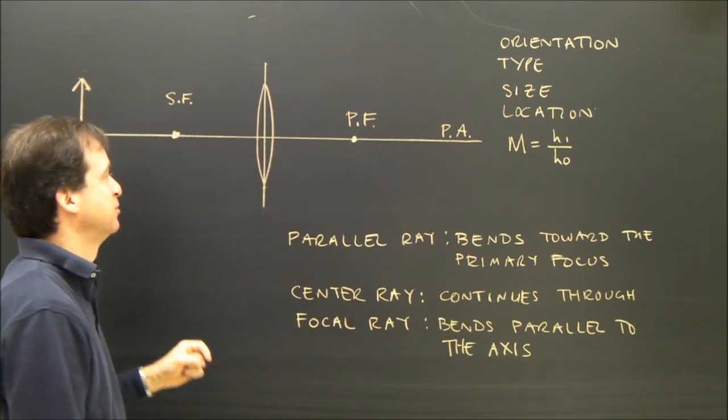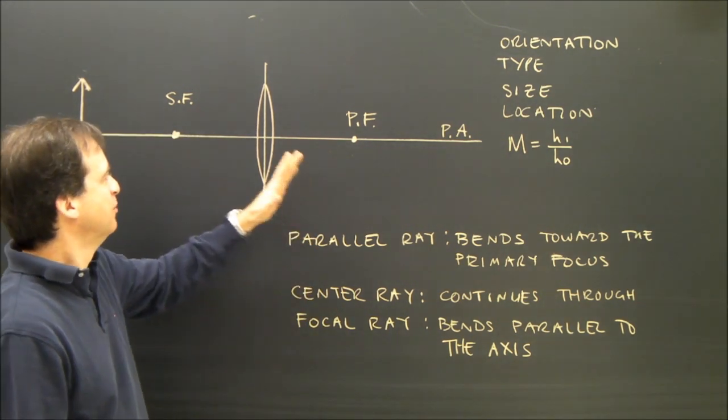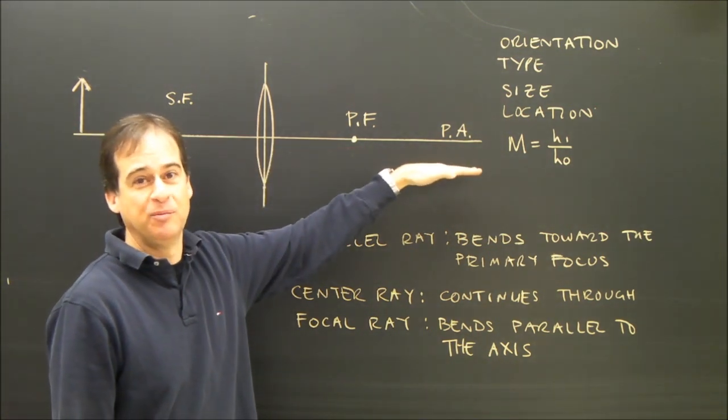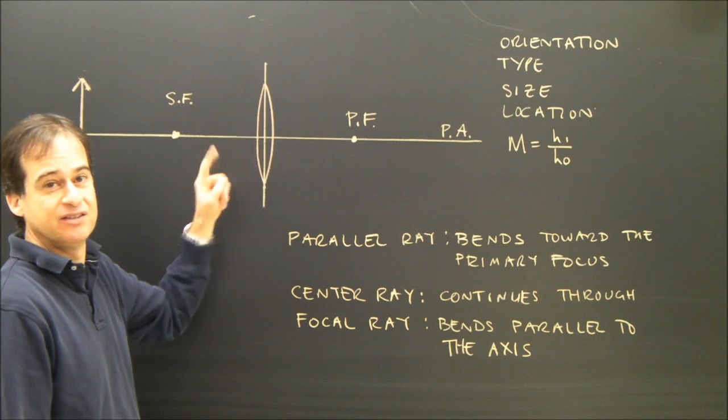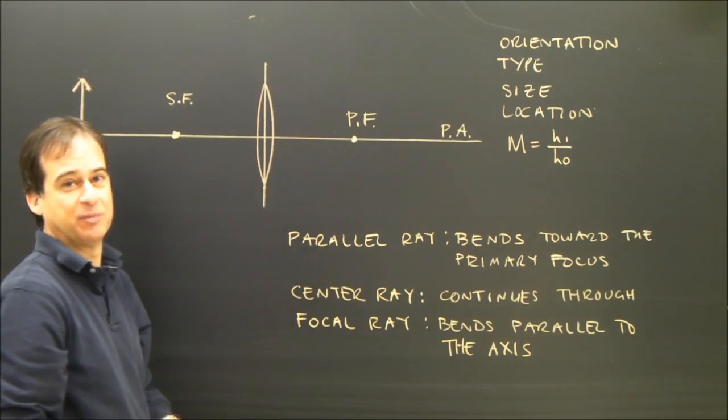With a ray diagram, you need a line to represent the principal or primary axis, PA. You have your lens, and this is a convex lens because it's shaped like that.